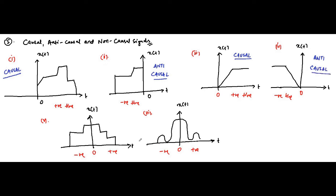And these signals which exist on both sides — they are not causal or anti-causal. They do not fit into those categories. They are non-causal. These two are non-causal. Because they exist on both sides — negative and positive sides — and do not fit into the causal category or anti-causal category. Since they are neither causal nor anti-causal, they are non-causal.